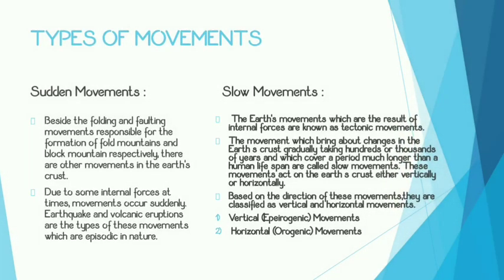Based on the movements, they are basically divided into sudden and slow. Besides the folding and faulting movements responsible for the formation of fold mountains and block mountains respectively, there are other movements in the earth's crust. Due to some internal forces, movement sometimes occurs suddenly. Earthquake and volcanic eruption are types of movements which are episodic in nature and are called sudden movements. Slow movements are the result of internal forces or tectonic movements that bring about changes in the earth's crust gradually, taking hundreds to thousands of years — covering a period much longer than a human lifespan.